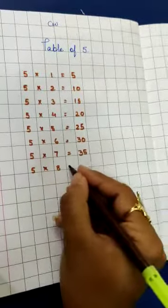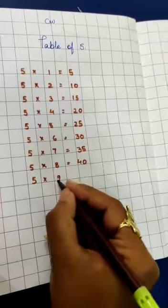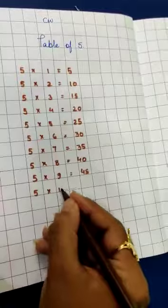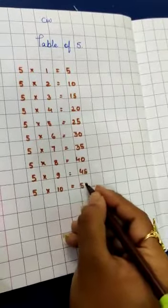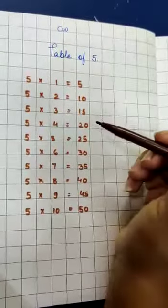5 8s are 40. 5 9s are 45. And 5 10s are 50. So write the table of 5 in your maths notebook.